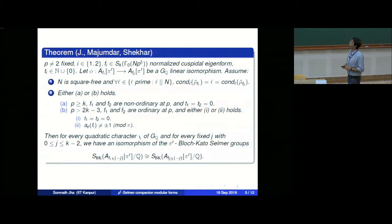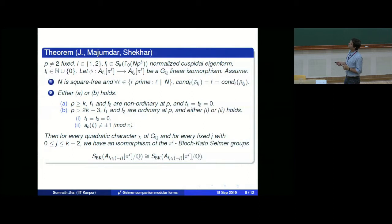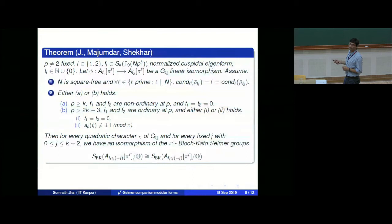Let me give a comparison with Mazur-Rubin, who prove a similar theorem for elliptic curves. The two things not present in our theorem are: first, they cover the case p = 2, and second, they allow additive reduction — they allow squares in the conductor. For multiplicative reduction, our condition is at least as strong as theirs. At p, it is more or less the same; whatever they cover, we can also cover — we are at least as general.